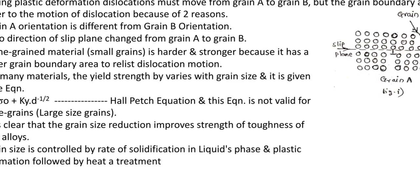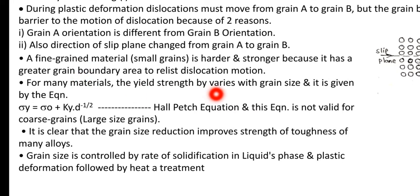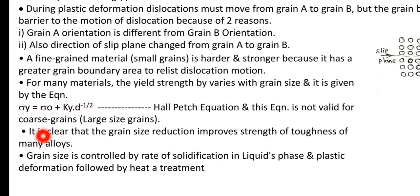The dislocations get blocked, and when they get blocked, the metal becomes stronger — its strength is increased. For many materials, the yield strength varies with grain size and is given by the Hall-Petch equation: sigma y equals sigma 0 plus k y times d raised to negative one-half. This equation is valid for fine grain structures but not for coarse grains. Grain size reduction improves the strength and toughness of many alloys, and grain size is controlled by rate of solidification and plastic deformation followed by heat treatment.